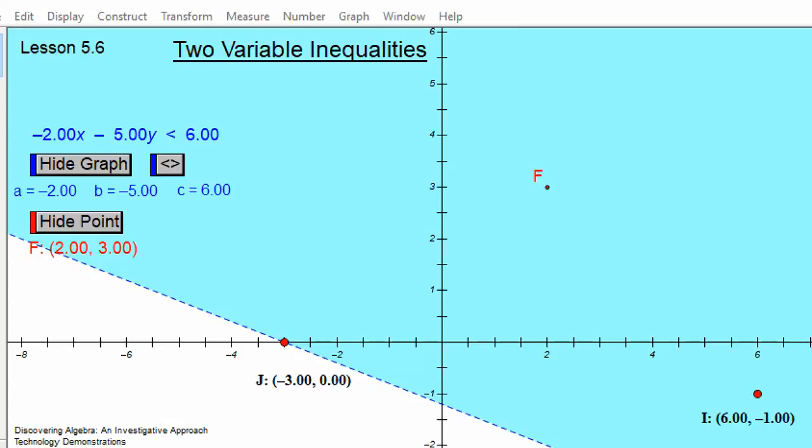Question 8 asks if negative 3, 0 is a solution to this inequality. Negative 3, 0 is graphed and labeled as point J.